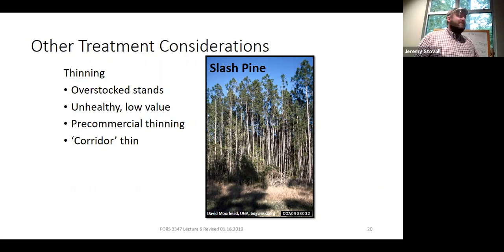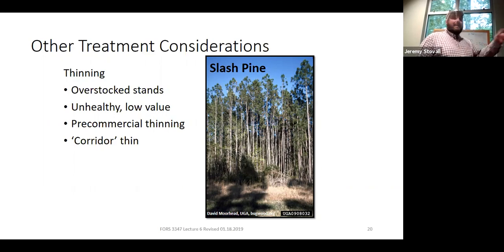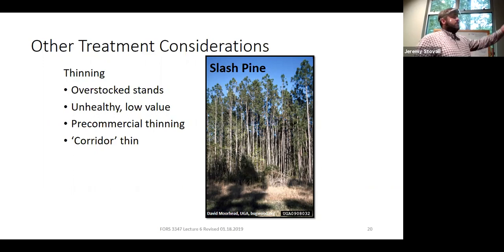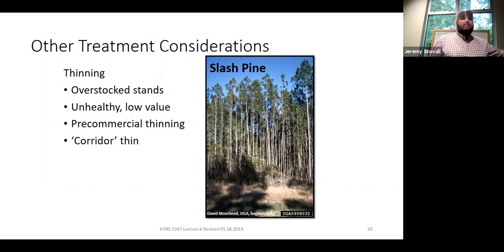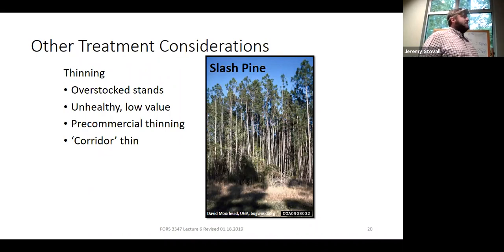Basically you doze down half the stand. The trees on the edge of those open corridors are the winners — they're going to take off. You've moved the stand into canopy differentiation much quicker and cut stocking by half, accelerating stem exclusion, shortening your rotation, and getting to your first commercial thin much sooner. A pre-commercial thin must be thought of as an investment — you're spending money now, but it makes everything after that more valuable and sooner.